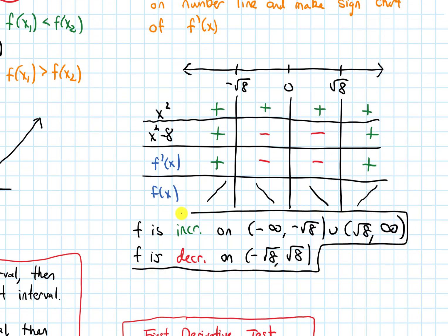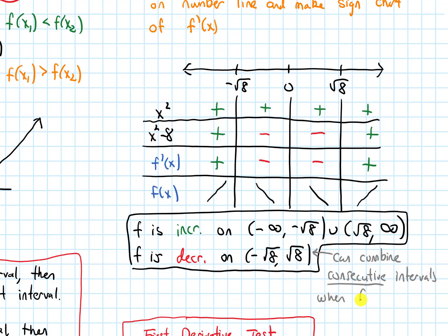A key thing to note: we can combine consecutive intervals into one when our function is continuous at the cut point. In this case the cut point was x equals 0, and our original function is a polynomial, which is continuous everywhere. If the original function were not continuous at 0, I could not combine the two decreasing intervals into one. We'll see an example of that in the discussion videos.